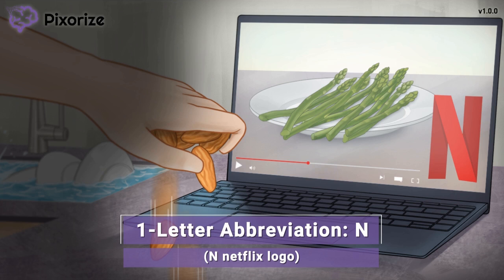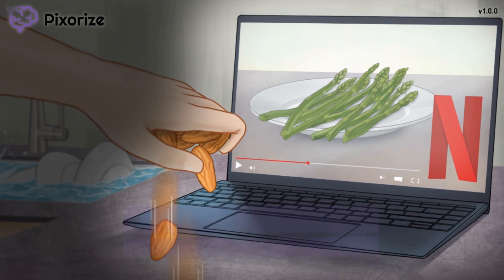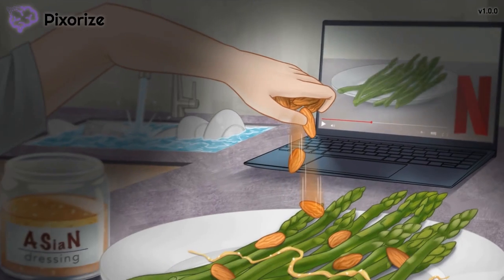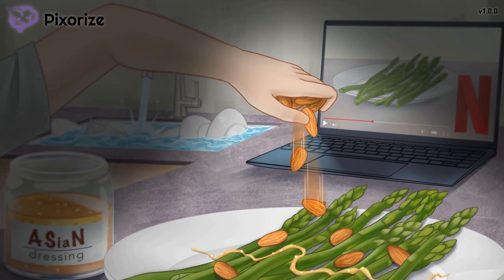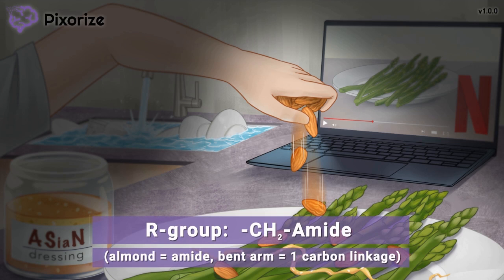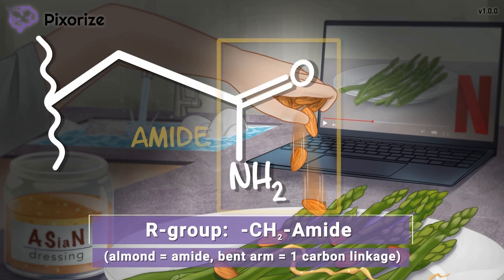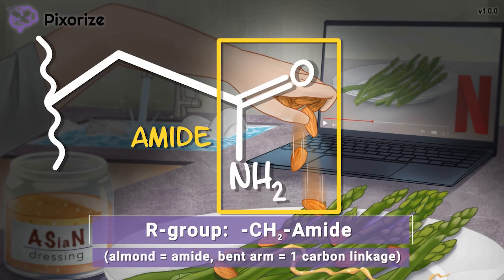Since asparagine's one-letter abbreviation is the letter N. Now that we've got all the names out of the way, let's move on to the structure of asparagine. As a finishing garnish, you're sprinkling some almonds over the top of your asparagus.